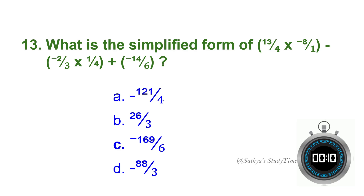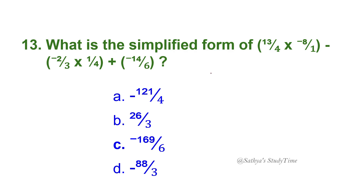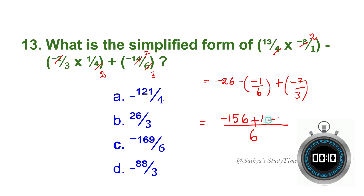Thirteenth question: What is the simplified form of the given equation? First simplify what is inside the brackets — cross-multiplying gives 2 here and 1 here. This leads to: minus 26/6 − (minus 1/6) + (minus 7/3). Taking LCM of 6: (minus 156 + 1 − 14)/6 = minus 169/6. The answer is option C.